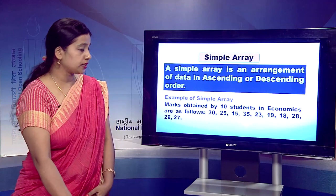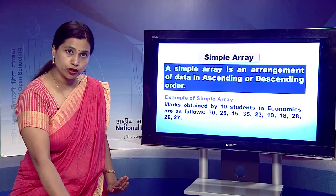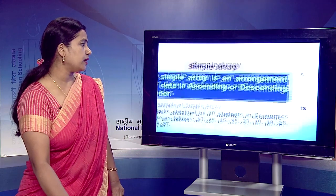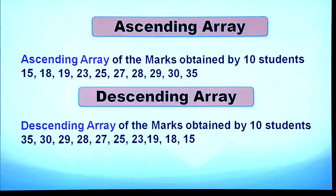In ascending order, we start from the lowest value. The lowest is 15, so in ascending order we write: 15, 18, 19, 23, 25, 27, 28, 29, 30, 35. This is the first way of presenting a simple array in ascending order. In descending order, we reverse the arrangement: 35, 30, 29, 28, 27, 25, 23, 19, 18, 15.